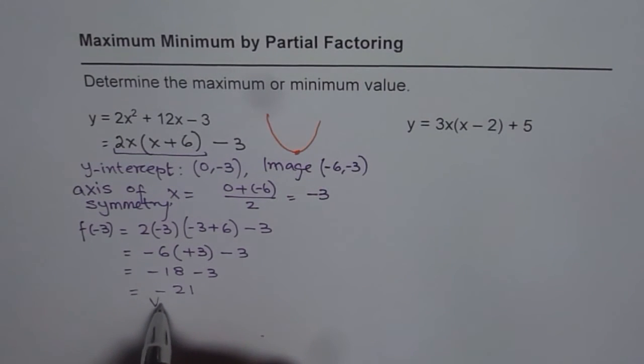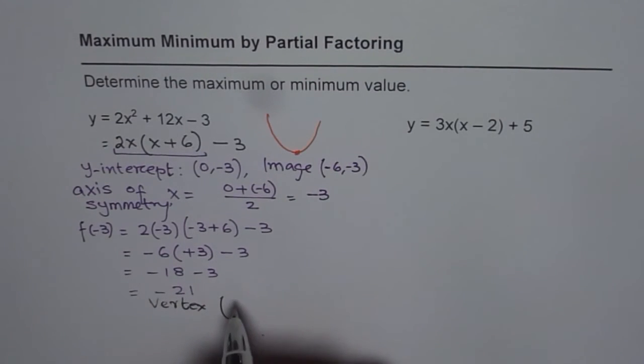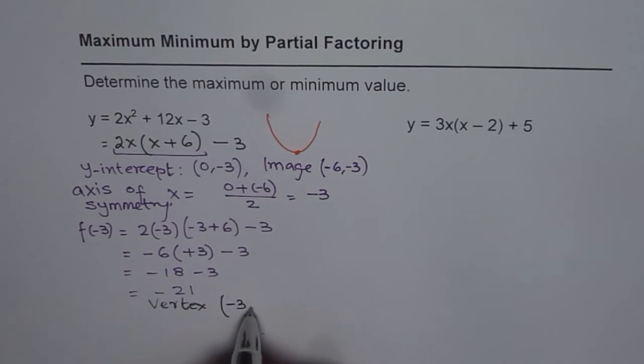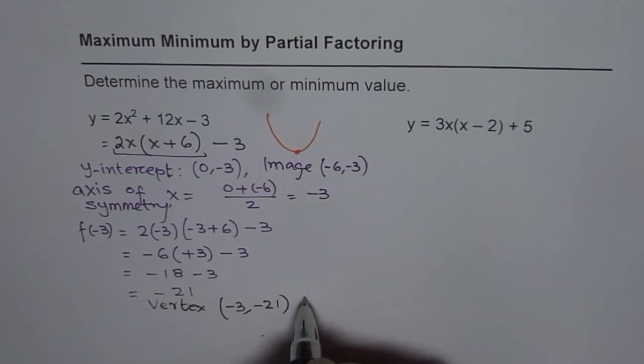So, in this particular case, we have a vertex which will be at x value of minus 3 and y value of minus 21. And this vertex will be a minimum.